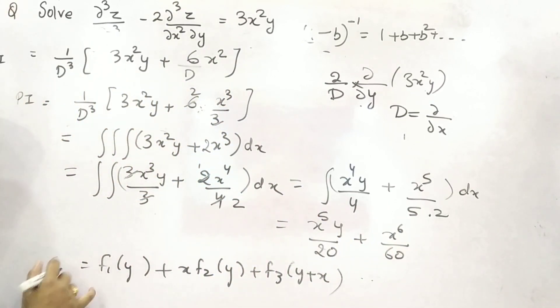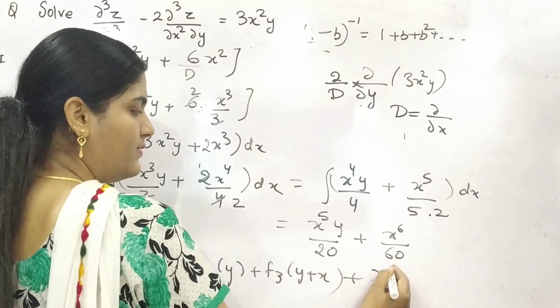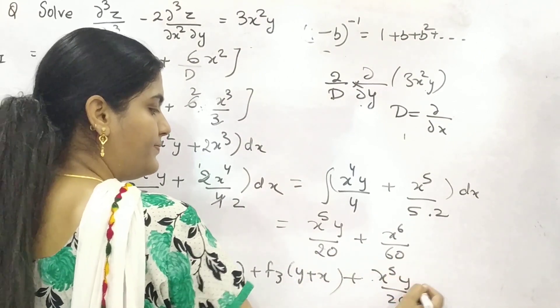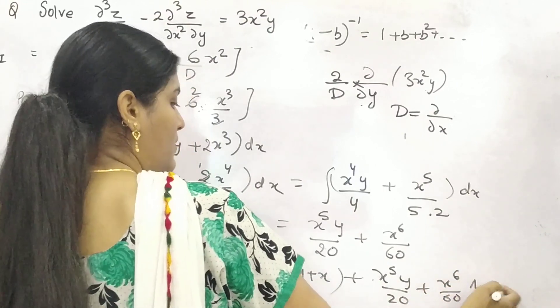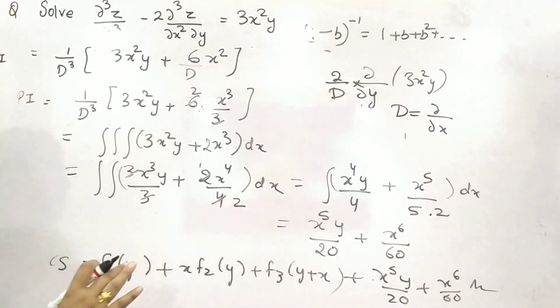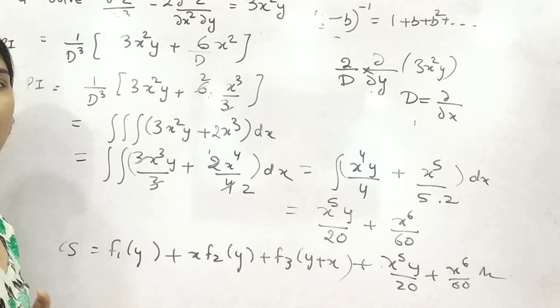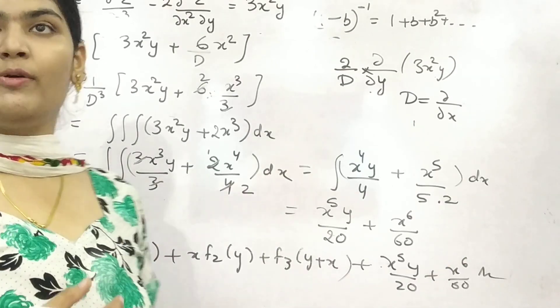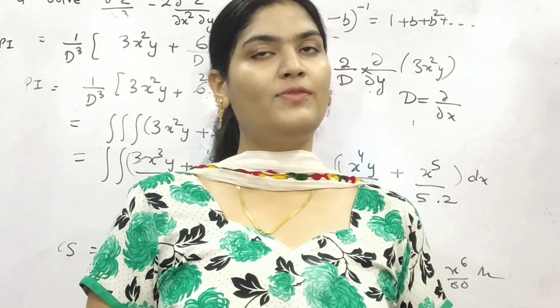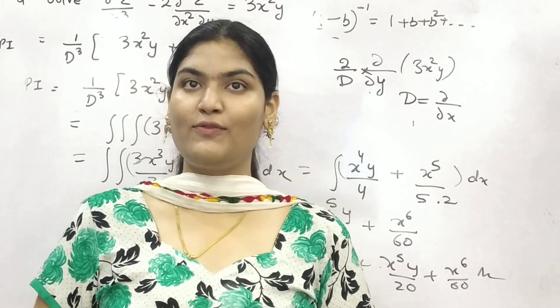Now, your complete solution will be complementary factor plus particular integral. So, this is how you can solve any of the number, any of the variable having in terms of x and y. I hope you understand this video. And if so, then don't forget to like, share and subscribe my channel. Till my next video, take care of yourself. Bye-bye.